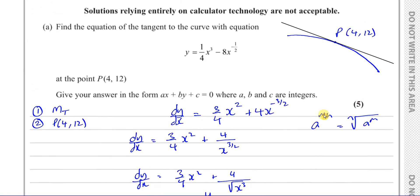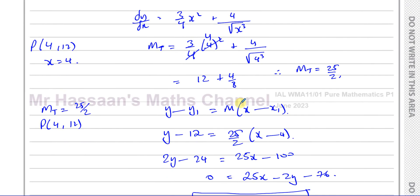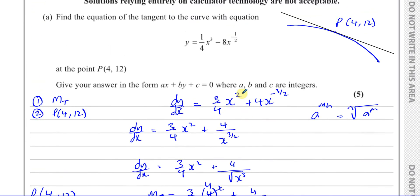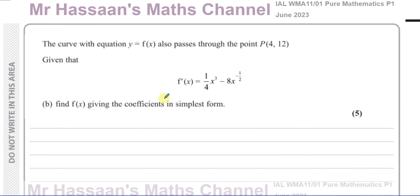So that's Part A done — the equation of the tangent to the curve at P is 25x minus 2y minus 76 equals 0. For Part B, the curve y equals f(x) also passes through point P(4, 12), and we're given that f'(x) equals a quarter x cubed minus 8x to the power of negative one half. We need to find f(x), giving the coefficients in simplest form.